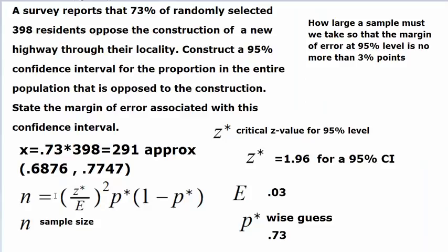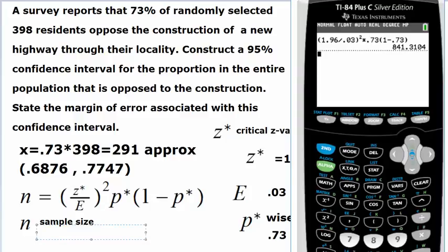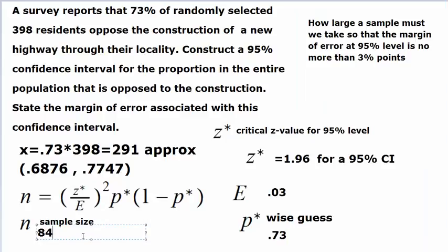We got our n. It's 841.31. Remember this for sample size, we will round it up, because it has to be a whole number. We need a sample of size 842.